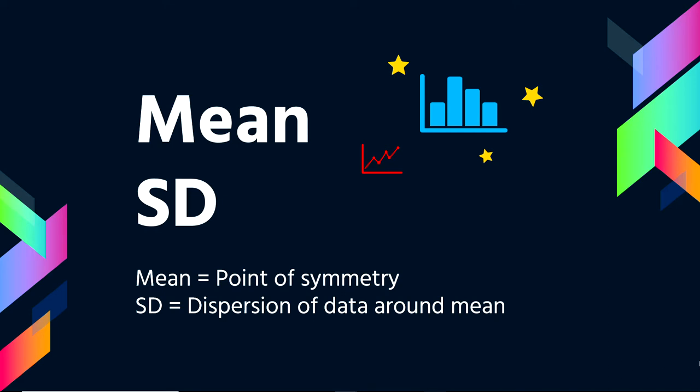The mean is the point of symmetry, the central point in the distribution, and the standard deviation tells us how data are dispersed around the mean. So in a normal distribution, what we care about is where is the center of it, and then how do people spread out around it.